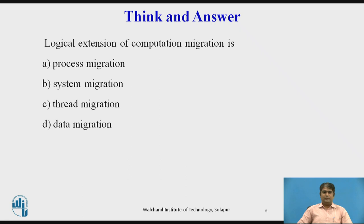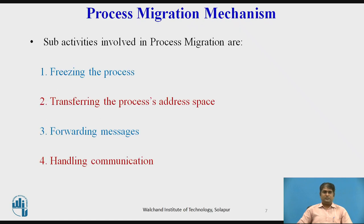The logical extension of computation migration is process migration. Migration of a process is a complex activity that involves proper handling of several sub-activities in order to meet the requirements of a good process migration mechanism. The four major sub-activities involved in process migration are: freezing the process on its source node and restarting it on its destination node, transferring the process address space from its source to its destination node, forwarding messages made for the migrant process, and handling communication between cooperating processes that have been separated as a result of process migration.